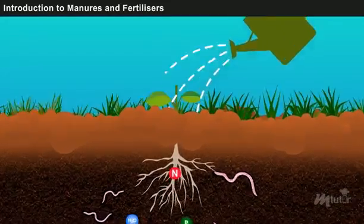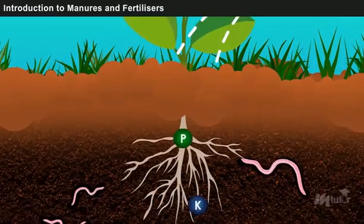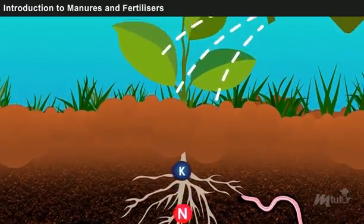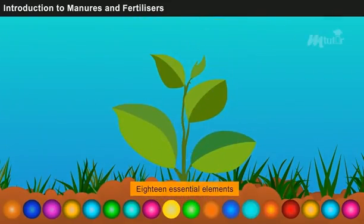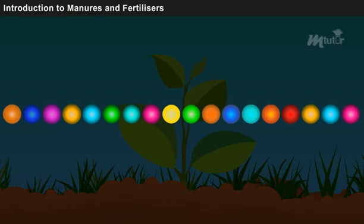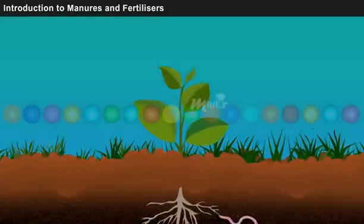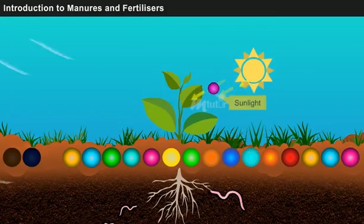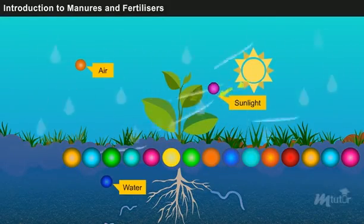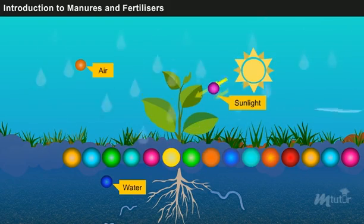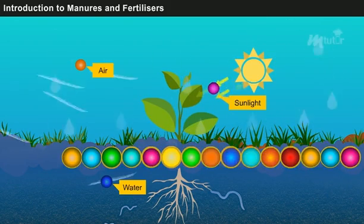It is a fact that a plant species requires around 18 essential elements for its growth. Out of the 18 elements, only 3 elements that are obtained from sunlight, air and water are readily available to the plants. Then, what about the remaining 15?